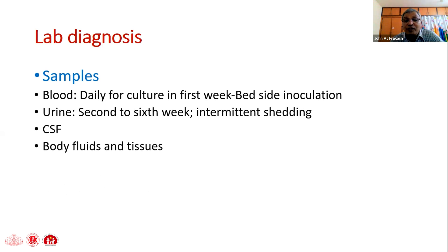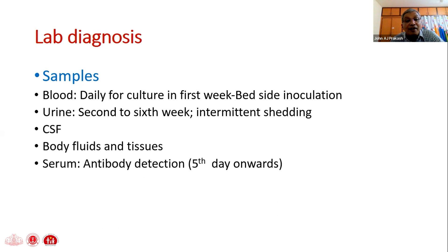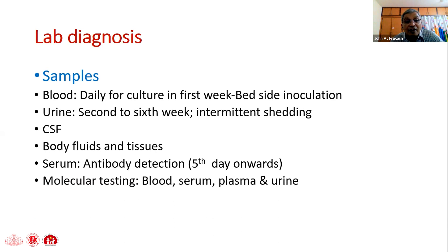CSF, body fluids, and tissues are other samples in those rare cases of disseminated leptospirosis. Antibody detection is positive from day five onwards, mostly IgM. The MAT starts getting positive from the beginning of the second week. For molecular testing, plasma is the best sample, with urine becoming useful once the patient moves into the second week of illness.